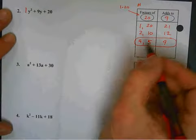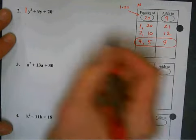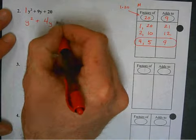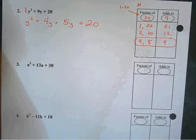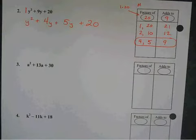All right. So, here's what I do. With this 4 and this 5, this is where the key idea comes in. I replace the 9 with a 4y and a 5y. Do we all agree that 4y plus 5y is 9y? Where do I get that 4y and that 5y from? Right here. The 4 and the 5. Okay? All right. So, that's kind of step one. Step two.